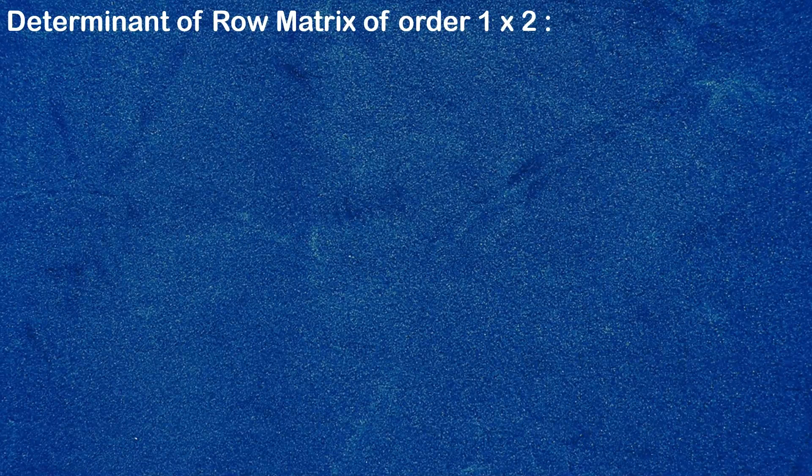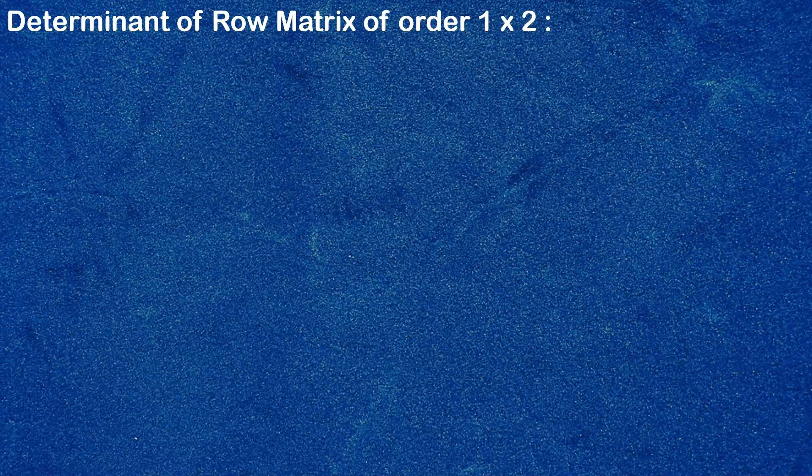First, we evaluate the determinant of a row matrix of order 1×2. The procedure of finding the determinant of a row matrix is derived from the general determinant of a matrix, whether it is a square matrix or non-square matrix. Before discussing the procedure, let me make it clear that the video is for a common student. The derivation of the method will not be discussed as it is a tedious and complicated one. The links of research papers are given in the description, so anyone can visit and learn how to derive the procedure.